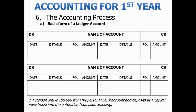The accounting process. Let's quickly have a look at the basic form of a ledger account using all the knowledge we have acquired thus far. We'll be using one of the previous examples: Jay Peterson draws 100,000 Rand from his personal bank account and deposits this as a capital investment into the enterprise Thompson Shipping. The first question we need to ask is: what is the effect of the transaction on the basic accounting equation?